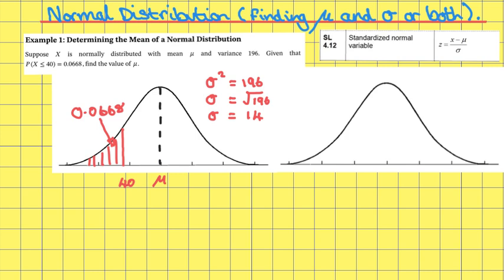I can draw a similar bell curve for a standardized normal distribution. Adding all the information I know to this standardized bell curve: the mean is equal to zero, the standard deviation is equal to one, and the probability that I know is 0.0668. I want to find the corresponding z-score.